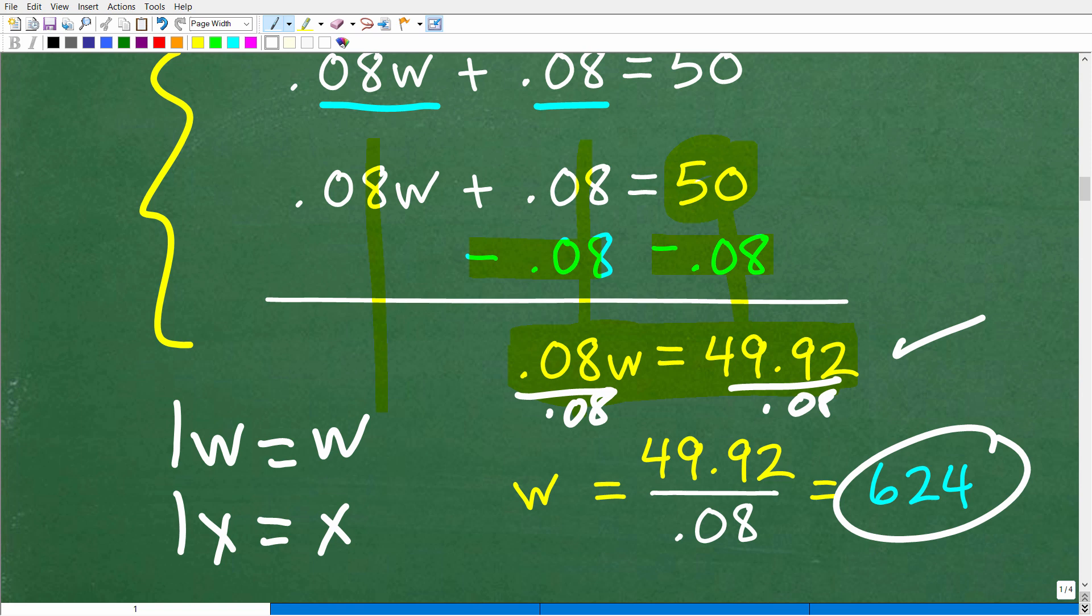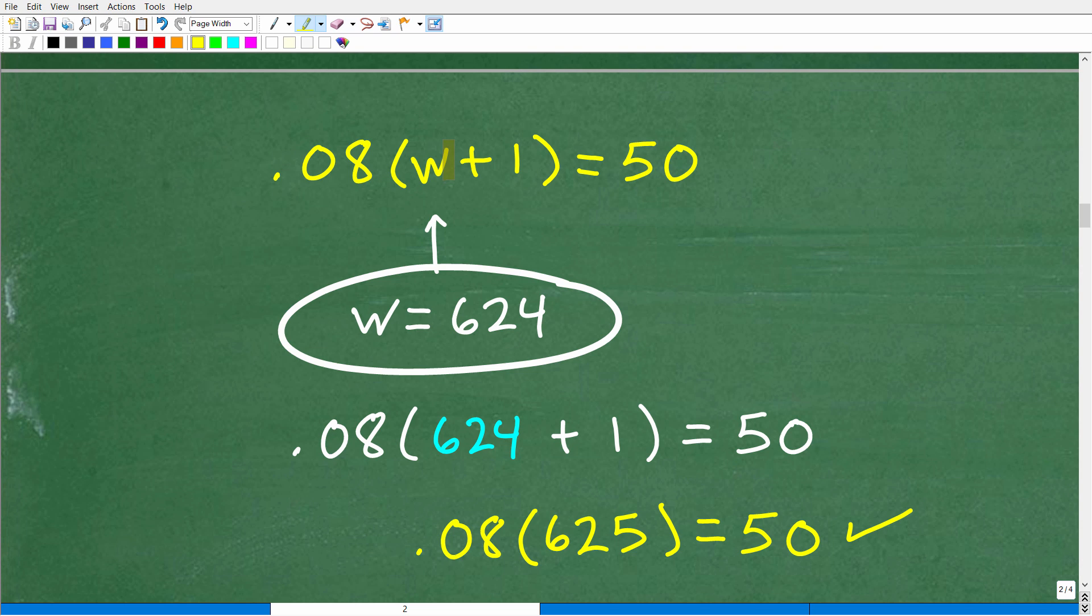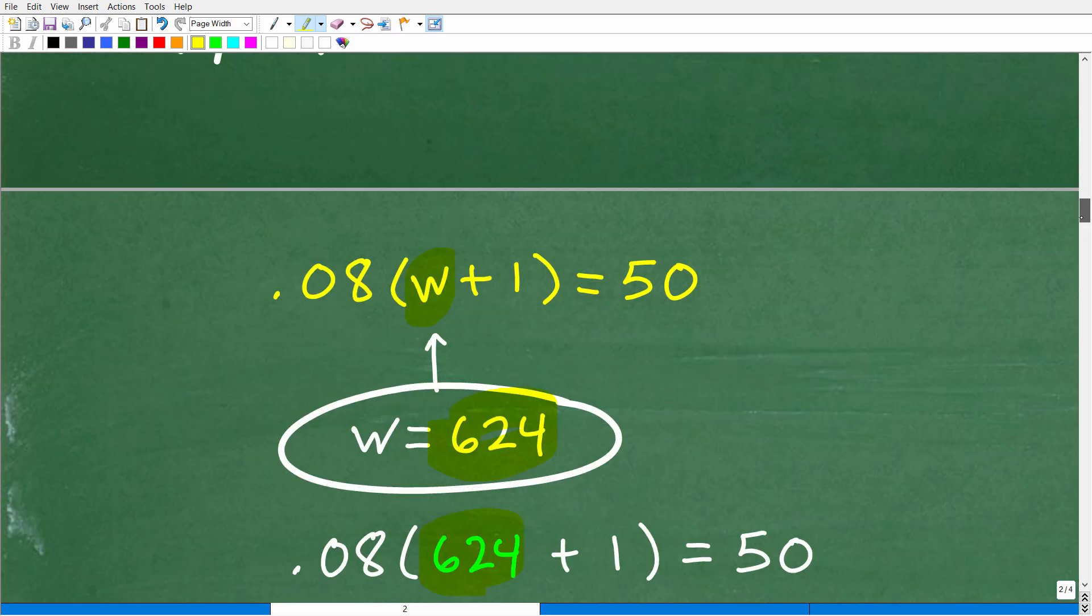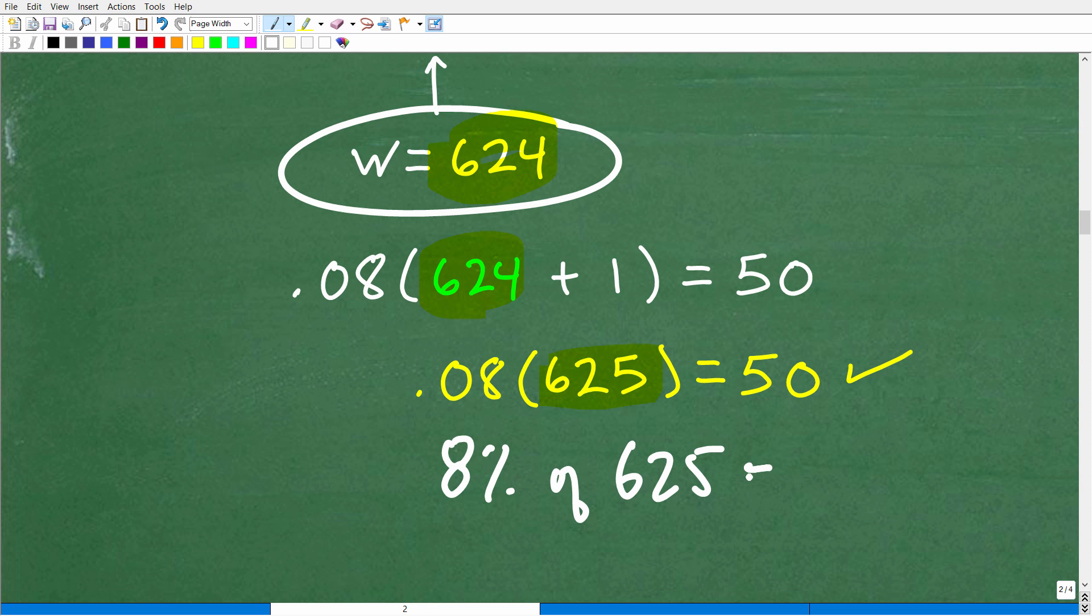All right, now let's go ahead and check this answer. And let's plug in 624 into where this W is at right here because we'll replace the W with 624 and then we'll just check this out and just make sure that we indeed did this right. So this is going to be 624 plus 1. 624 plus 1, last time I checked, is 625. Now we're going to take 8% of this value. Remember, this was the equation. 8% of what is 50? Now what we're saying here is 8% of 625. This is 8% of 625. Is this 50?